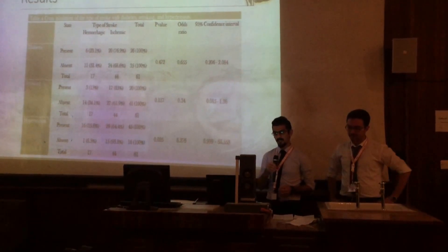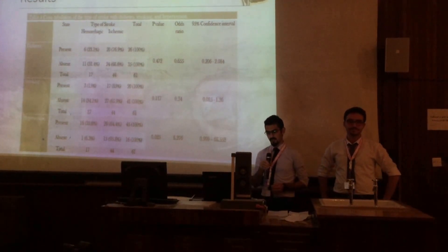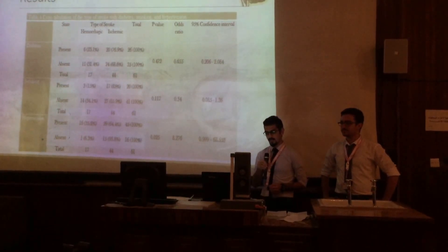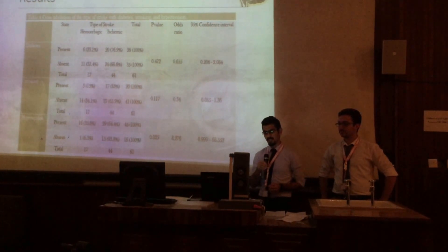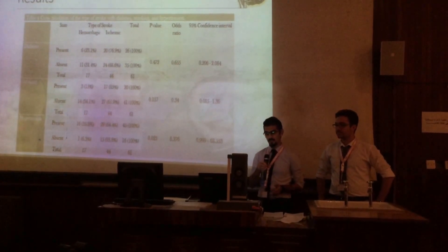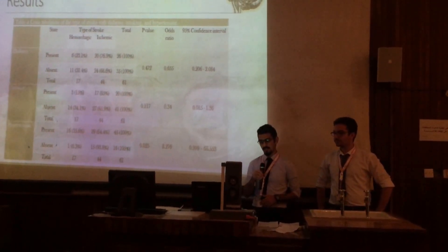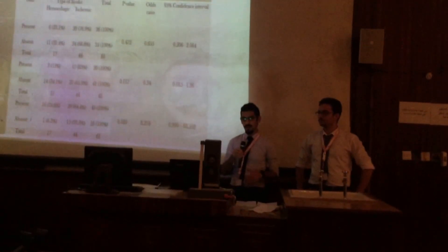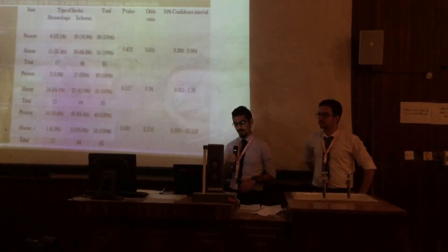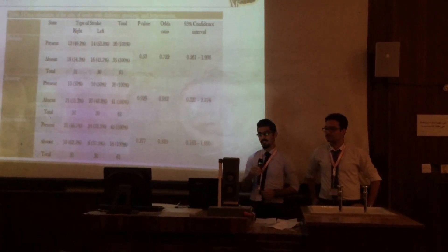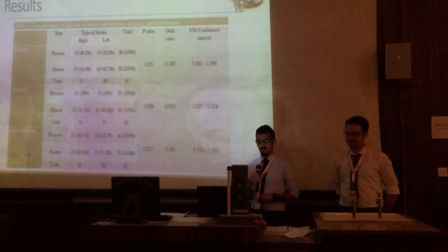Regarding diabetes and smoking, there was no significant association with the type of stroke. But regarding hypertension, the p-value is 0.025, so there is an association between hypertension and the type of stroke. Using the odds ratio, there appears to be an association between hemorrhagic stroke and hypertension. Regarding the side of stroke, none of the three factors — diabetes, smoking, or hypertension — showed any association.